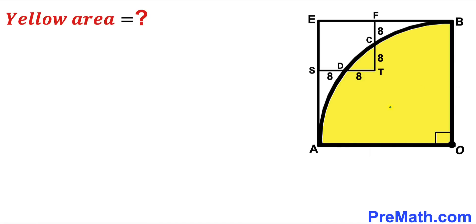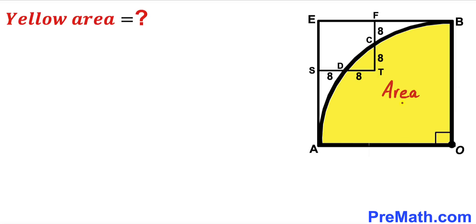Welcome to pre-math. In this video we have a yellow quarter circle fully inscribed in square AOBE. A tiny square STFE intersects the quarter circle at two points C and D, such that segment SD is 8 units, segment DT is 8 units, segment FC is 8 units, and segment CT is 8 units. Our task is to calculate the area of this yellow shaded quarter circle.